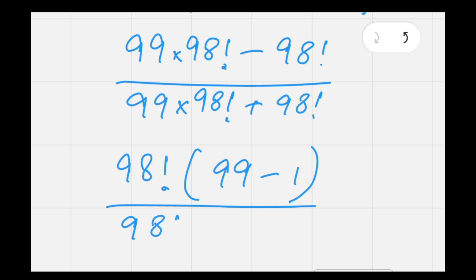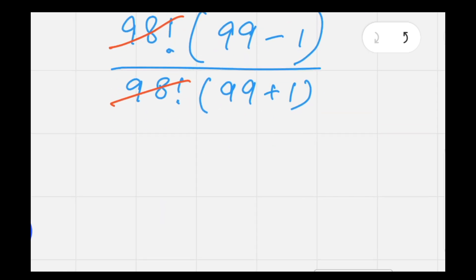Then we will have cancellation of 98 factorial from numerator and denominator, which simplifies the expression as 99 minus 1 over 99 plus 1, which equals 98 over 100.